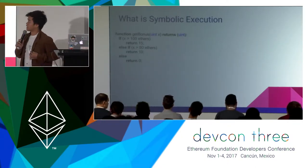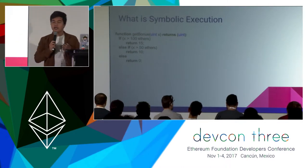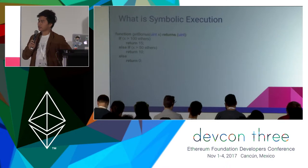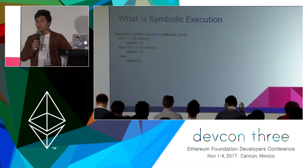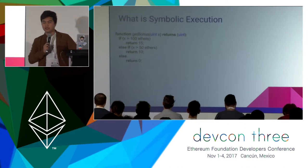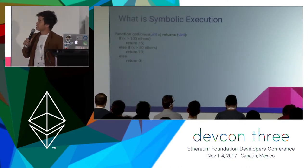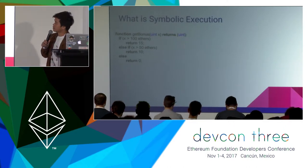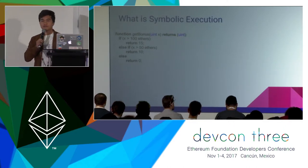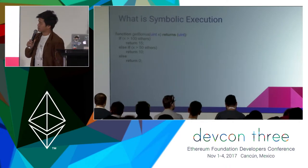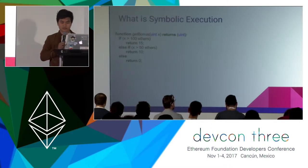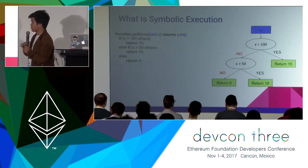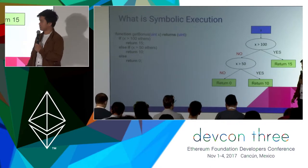So what is symbolic execution — the technique behind Oriente? I'll use a simple function that gets the bonus given some contribution amount in a token sale. If the amount is greater than 100 ETH, the bonus is 15%. Otherwise, if the amount is greater than 50 ETH, you get a 10% bonus. Otherwise, there's no bonus for you. Looking at this function, there are three main branches in the entire function.